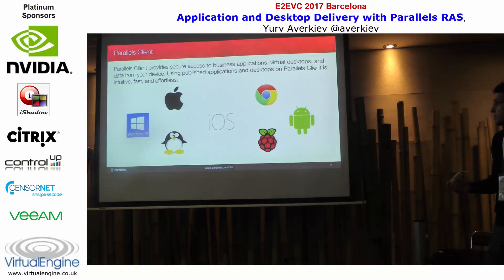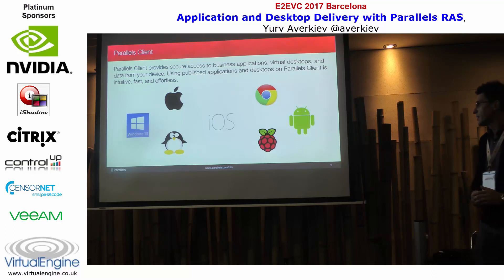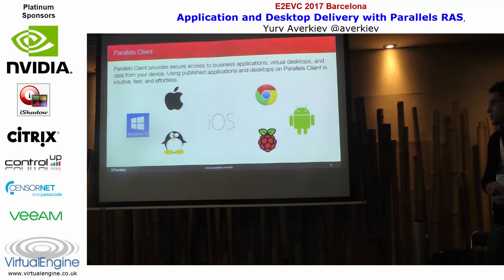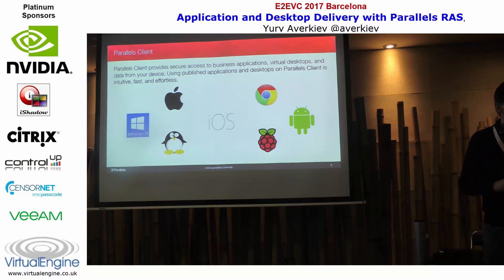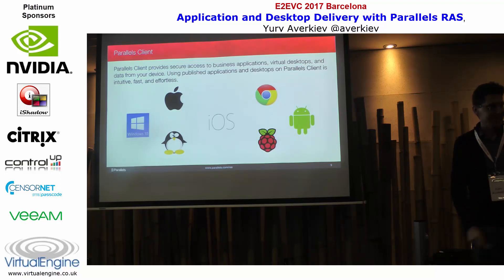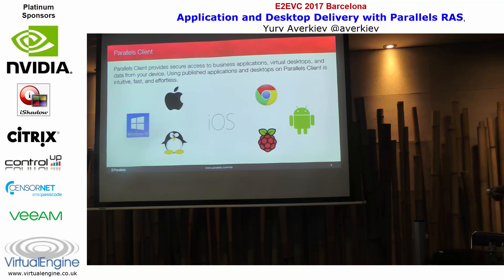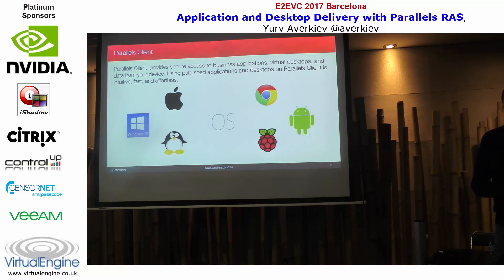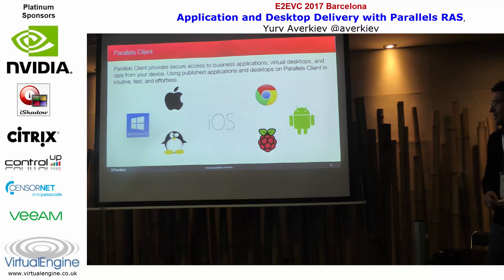The Parallels Client is what users use to access published applications and desktops, and it's available on all major platforms. Windows Phone is no longer maintained — there are like five users left — and we're working on a Windows Store version coming next year. You get the best performance with the Windows desktop client because it automatically gets support for all the latest RDP features and remote effects, but non-Windows clients are not far behind in performance.